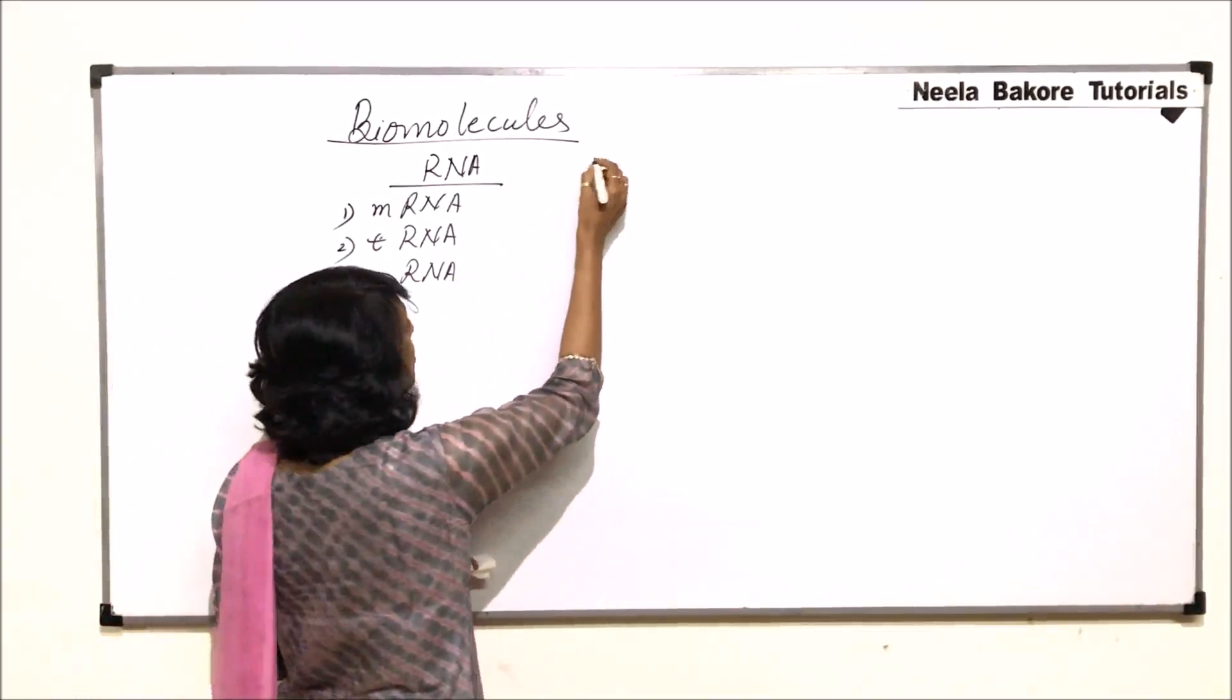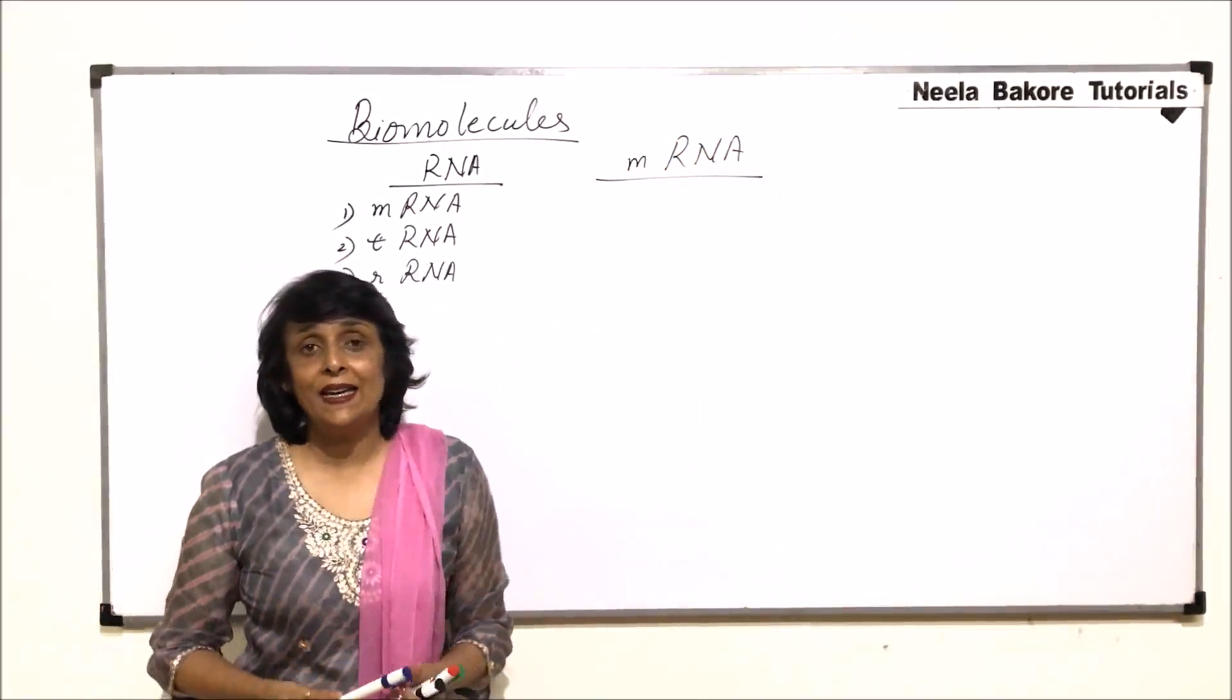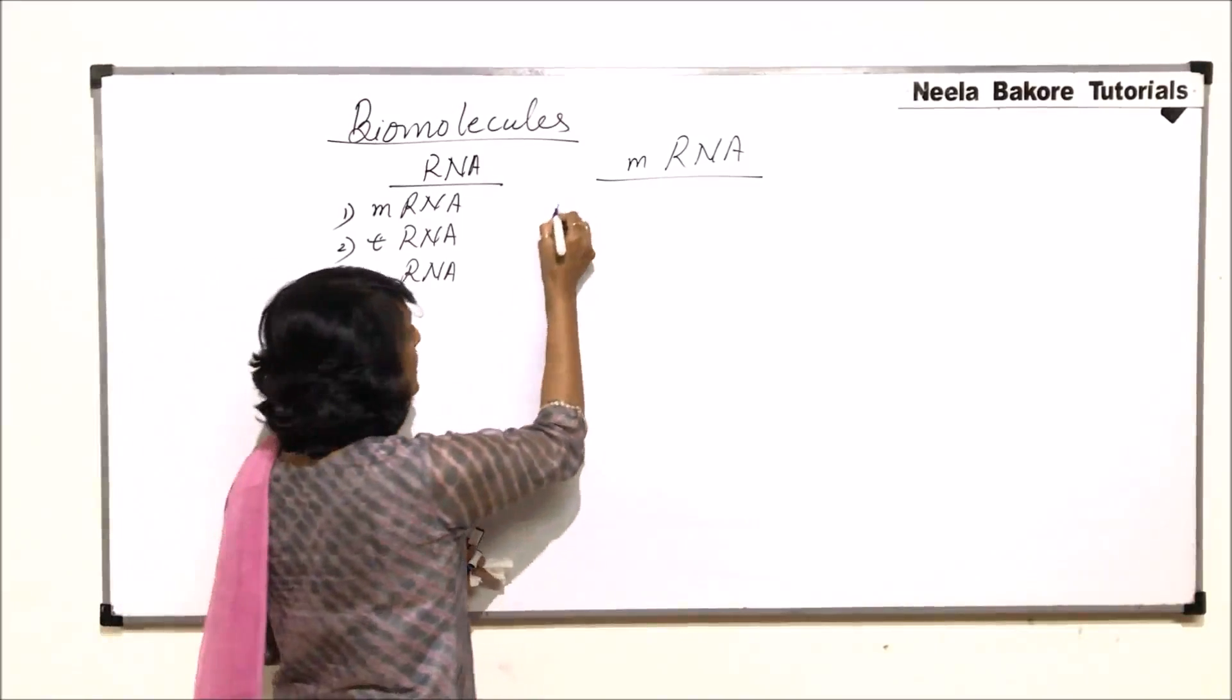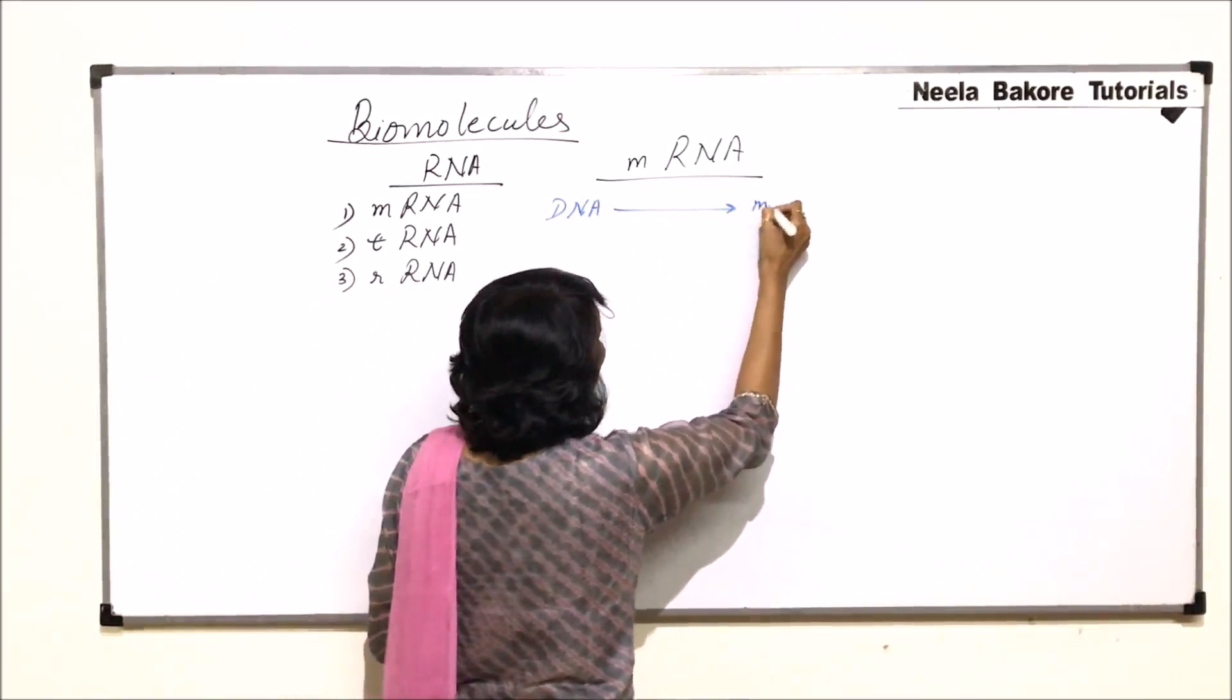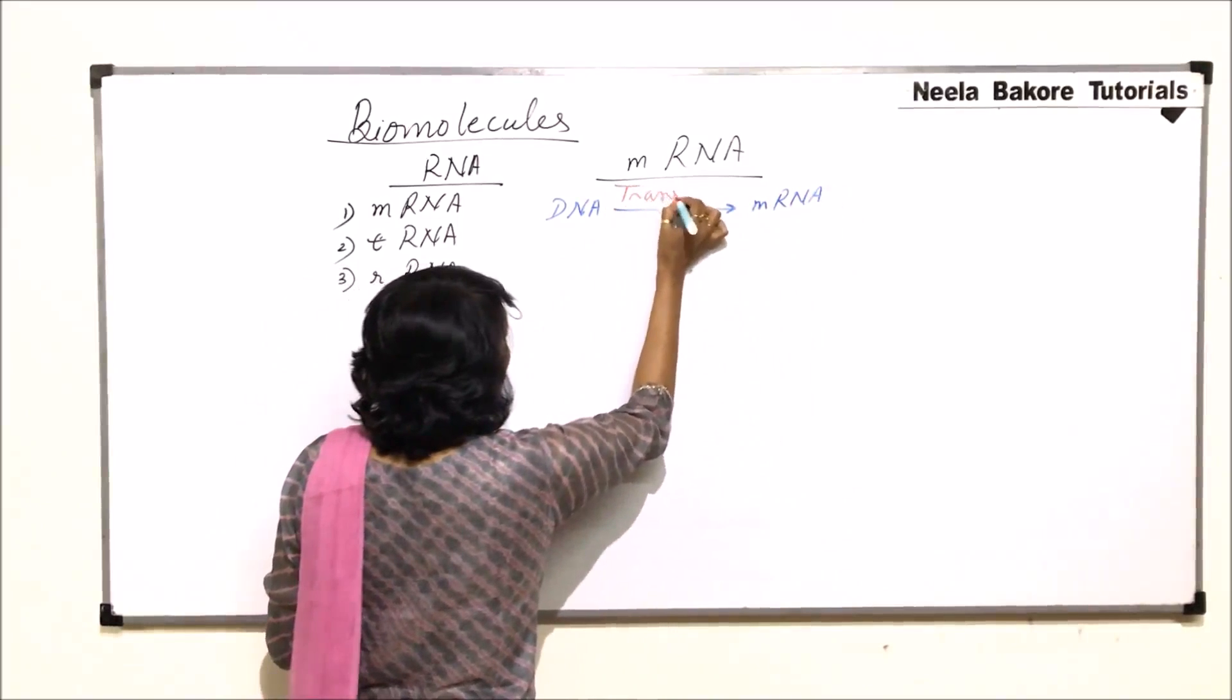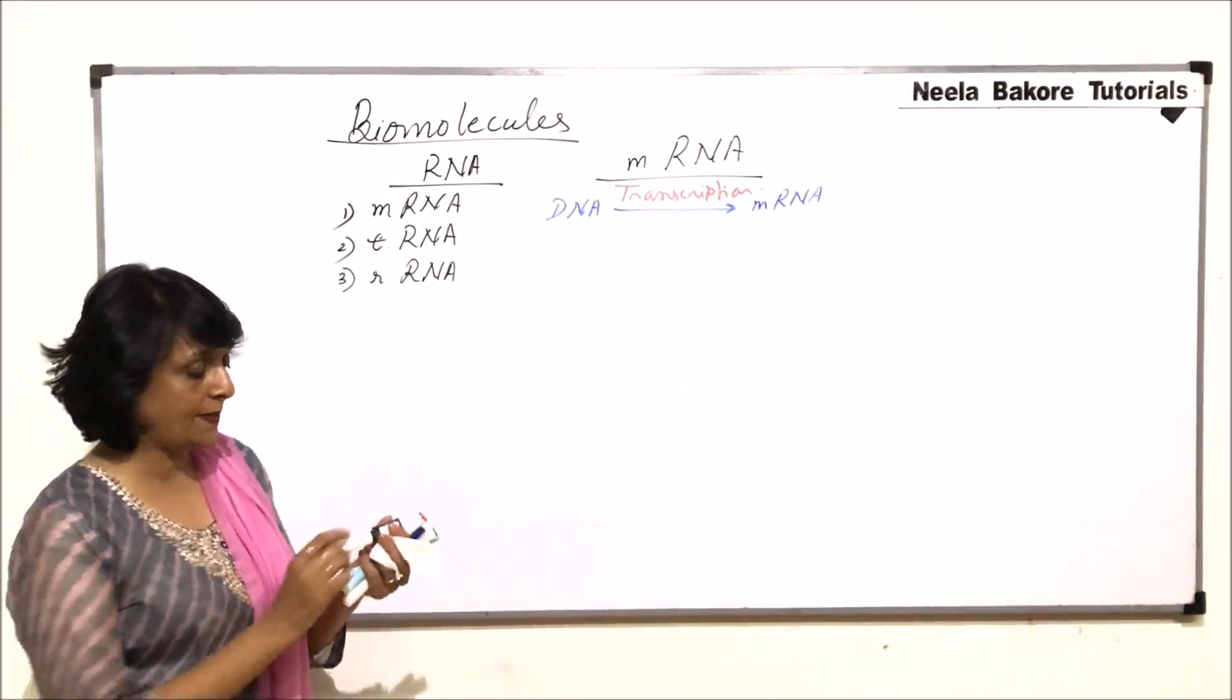So we will take up all these three in detail starting with mRNA or messenger RNA. mRNA is synthesized on DNA. From DNA to mRNA, the process is known as transcription. So DNA undergoes transcription and we get mRNA. This is not one step reaction. We are just writing the name here. This is transcription. Now before we take the detailed structure of mRNA, we need to understand how this process takes place.